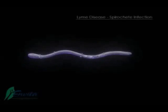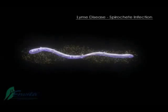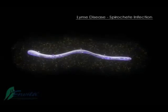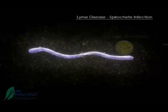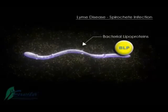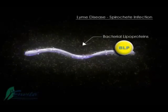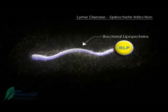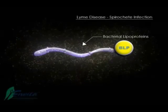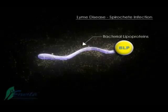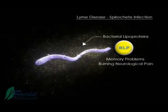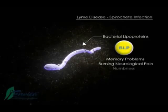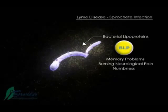Lyme disease is characterized by a spirochete infection. The spirochete releases bacterial lipoproteins, which are neurotoxins. The BLP neurotoxins are associated with symptoms like memory problems, burning and neurological pain and numbness.